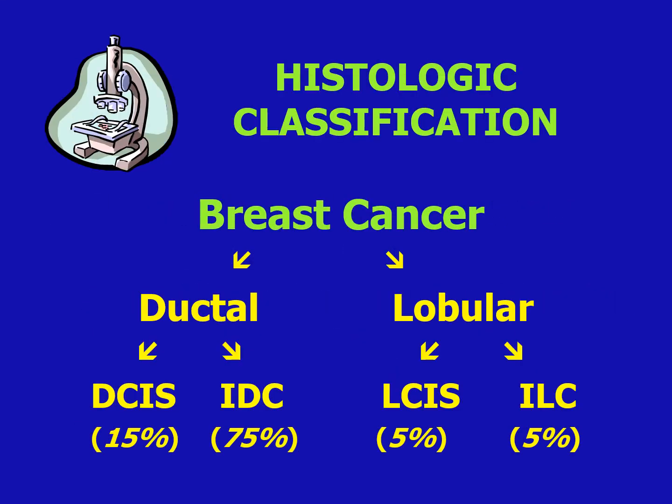For histologic classification of breast cancer, it is either ductal or lobular. Focus on the 75% intraductal carcinoma, which is the most common. Rarer would be your lobular malignancies — intralobular carcinoma and lobular carcinoma in situ — which are both at 5%.